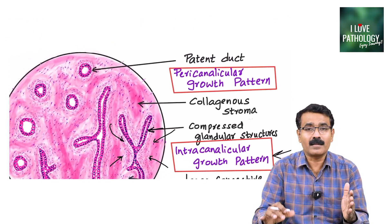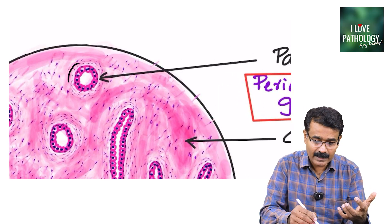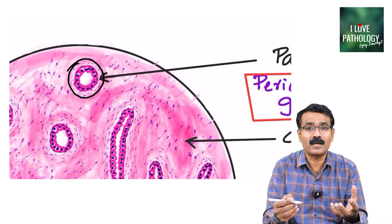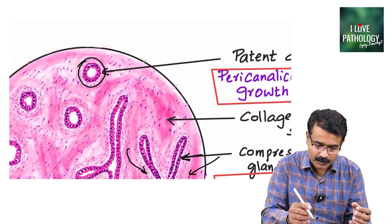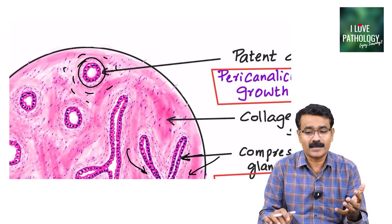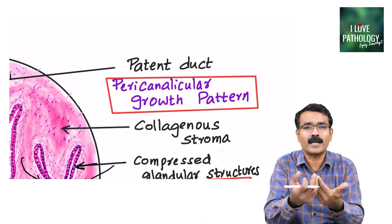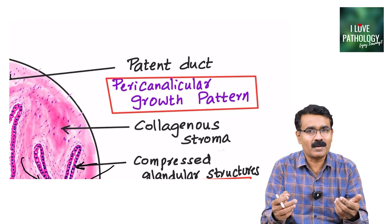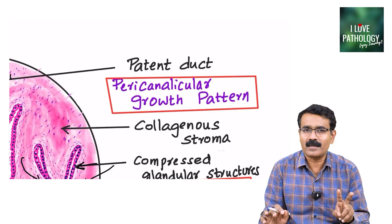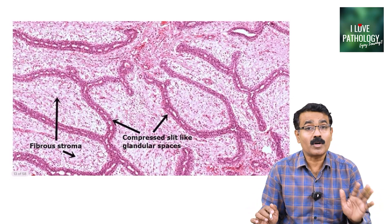In the pericanalicular pattern, the fibrous stroma is not so pronounced that it compresses the glandular structures. The glands still retain the patency of the lumen. The fibrous proliferation is around the patent duct — 'peri' meaning surrounding the ductular pattern — so that is called the pericanalicular pattern. If you identify these two patterns on your microscopy slide, the diagnosis of fibroadenoma is done.